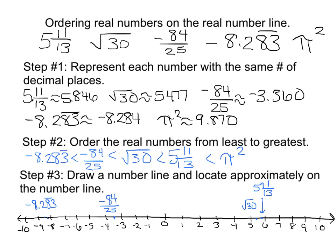And then finally, we have the pi squared, which is 9.870. So that's going to be real close to my 10, to the right of my 10. And I'm going to label that as pi squared. And that's how we are going to order our real numbers on a number line.